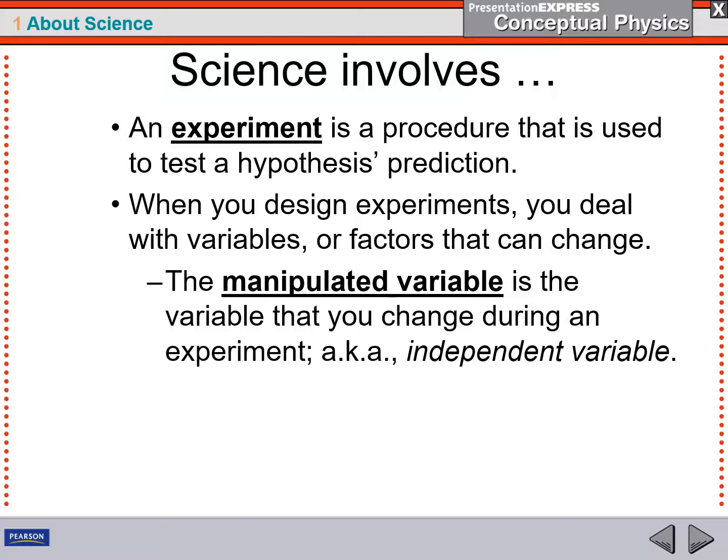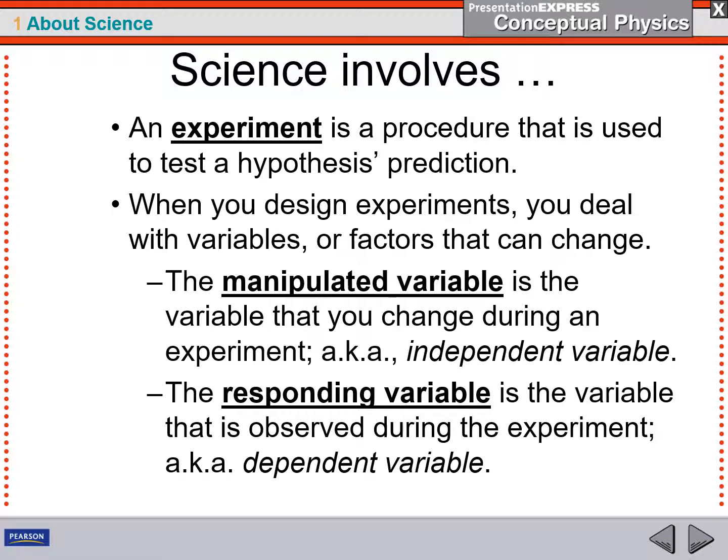And there's two sets of variables that we're most particularly interested in. Those that we change on purpose, we're going to call manipulated variables. In math class, you might refer to them as an independent variable. It's the one that you change on purpose during an experiment. The results of a manipulation lead to responding variables. In math class, you might call these the dependent variable.